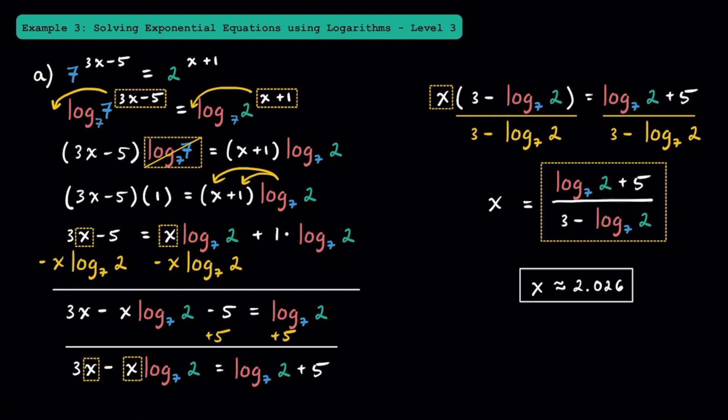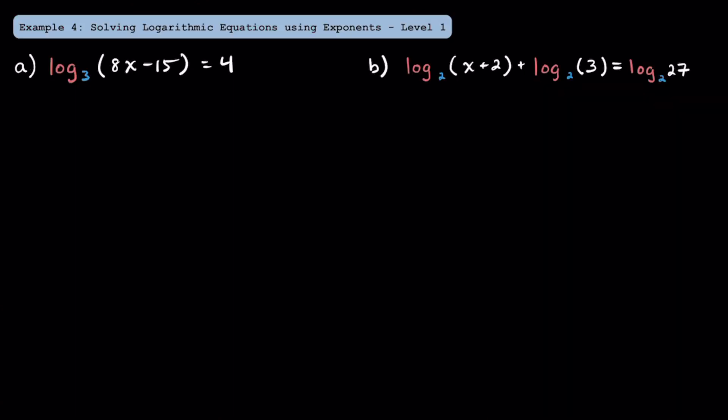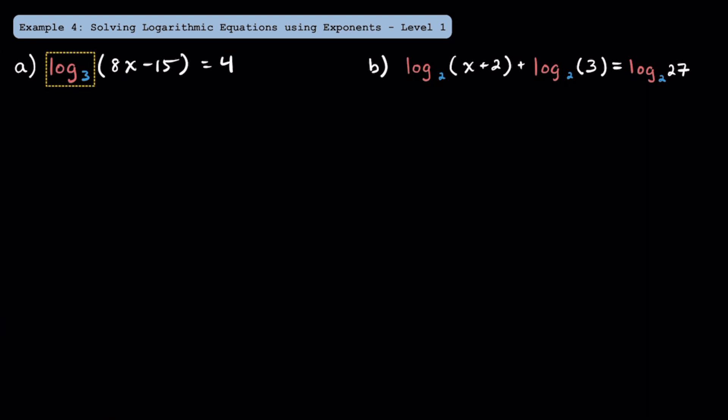Equations like this are typically a little bit more challenging just because they have different bases for their powers. Now that we've practiced solving exponential equations using logarithms, let's practice solving logarithmic equations using exponents. Let's look at this equation where we have log base 3 of the quantity of 8x minus 15 is equal to 4.